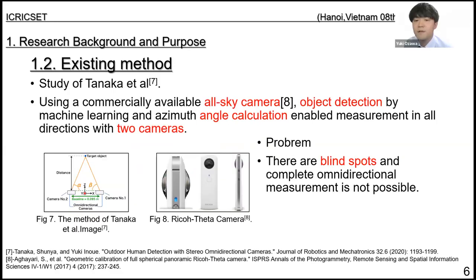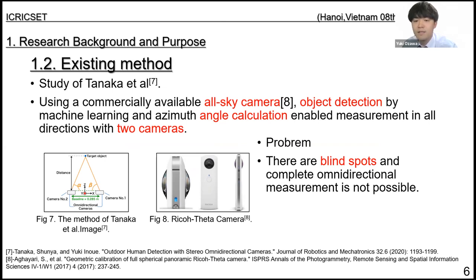In this paper, an all-spec camera with machine learning is used to detect objects and calculate angles for omnidirectional measurement with two cameras. However, this method has a blind spot due to the extended space variance shown in Figure 7, making it not a perfect omnidirectional measurement.